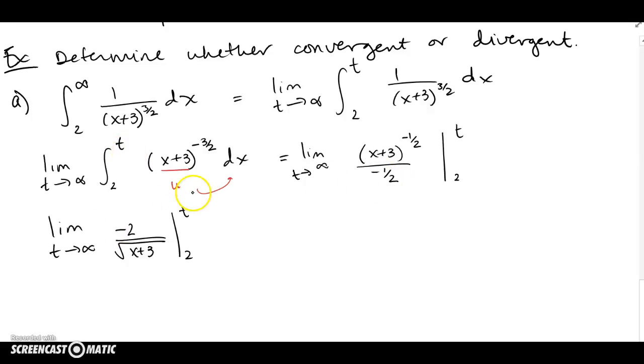Let's go analyze that. So we've got -2, and then that's a radical in the denominator. Let's go put in the limits of integration. So we've got -2 over the square root of t+3 minus a -2 over, in the bottom, 2+3 is 5.